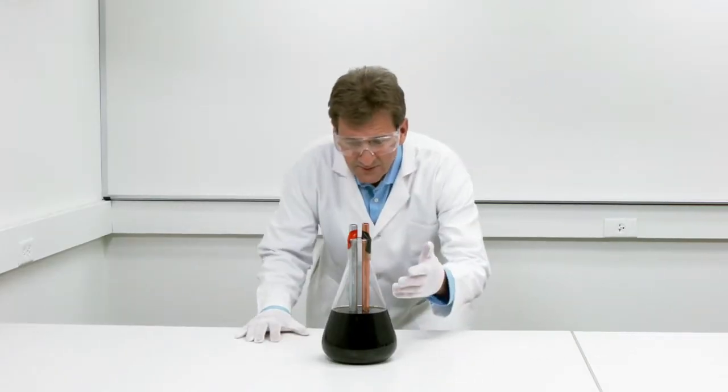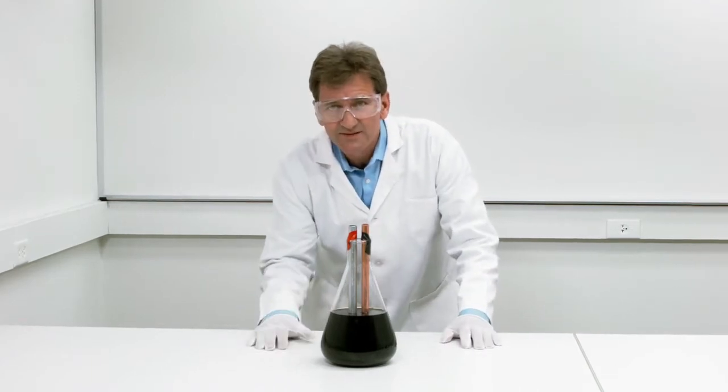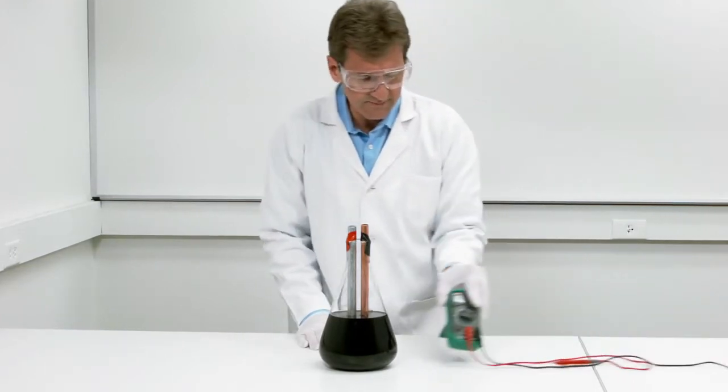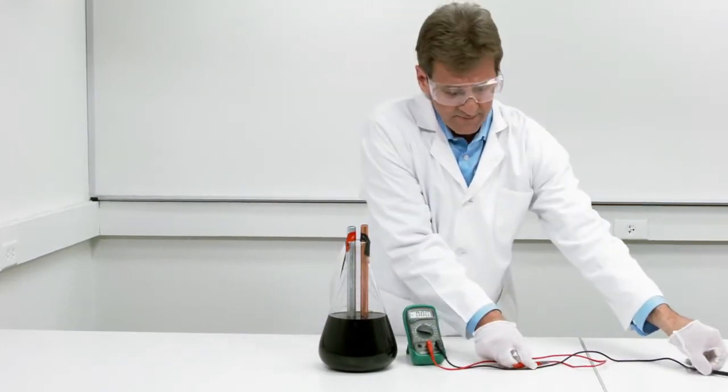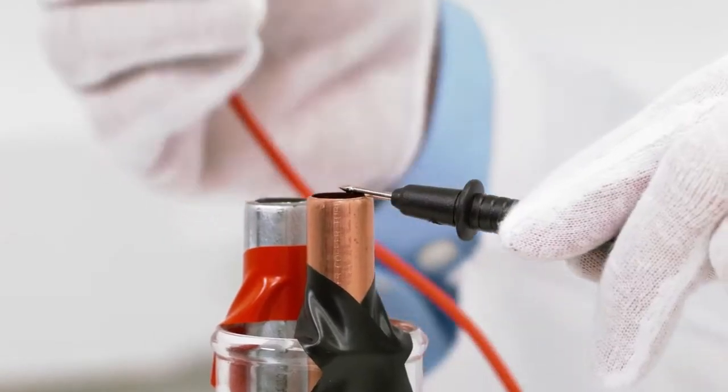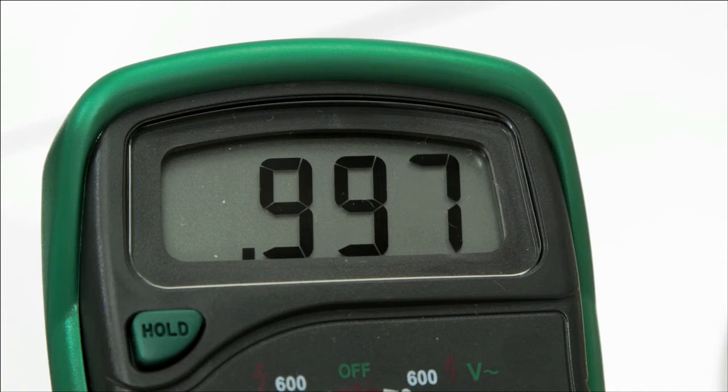There's a buildup of electrons on the copper side and a loss of electrons on the zinc side. If we give these electrons some way to flow, like through this wire, the extra electrons here will move to balance the loss of electrons here. We can measure the pressure of that electron flow as almost exactly one volt.